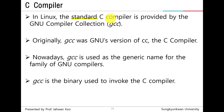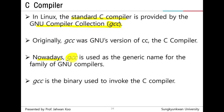C compiler: in Linux, the standard C compiler is provided by the GNU Compiler Collection, or GCC. Originally, GCC was GNU's version of CC — CC meaning C compiler. Nowadays, GCC is used as the generic name for the family of GNU compilers. GCC is the binary used to invoke the C compiler.